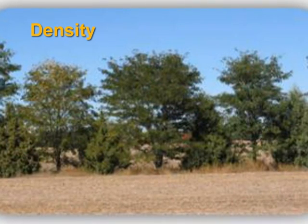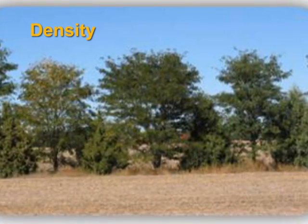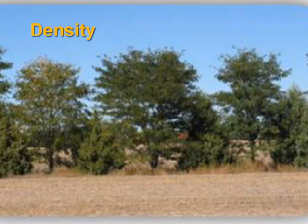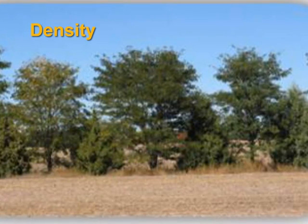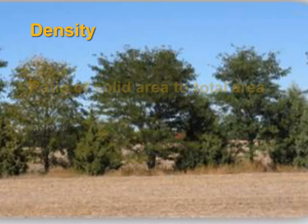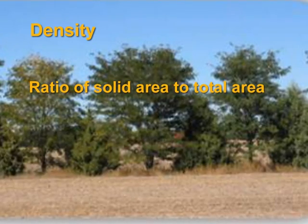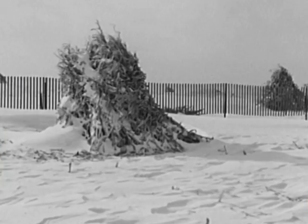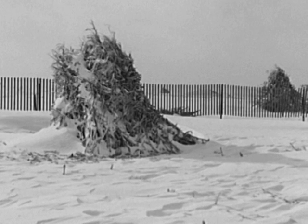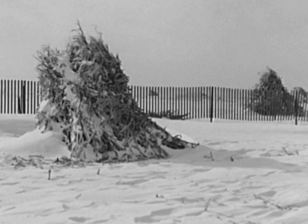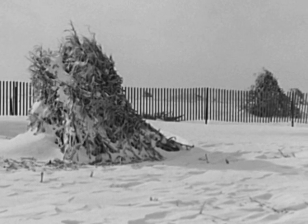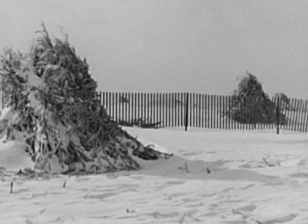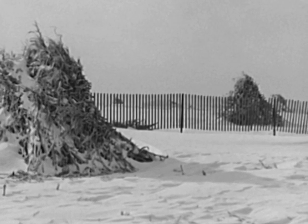The first aspect of windbreak design we'll consider is density. The effectiveness of a windbreak often is expressed in terms of its density — the ratio of the solid area of the trees or shrubs to the total area of the windbreak. This takes a bit of practice to visualize. Think of a slatted snow fence: the total area of the fence has 50% slats or solid area, so the density is 50%.